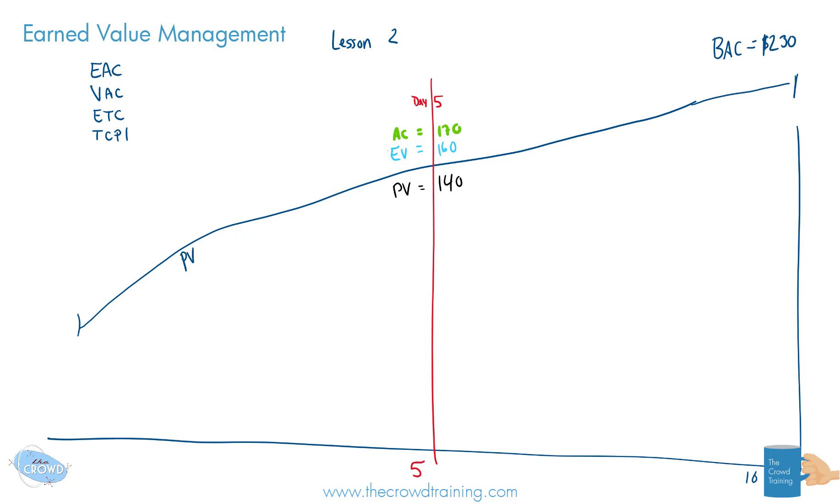And now, we want to use this information to help us predict, or if we had like a big crystal ball and we were trying to look into that and gaze into it and look at all the smoke and try to predict what possibly could happen from this point in day five until the end. There's a couple of things to take in mind. One, we already know that the budget at completion is about $230.